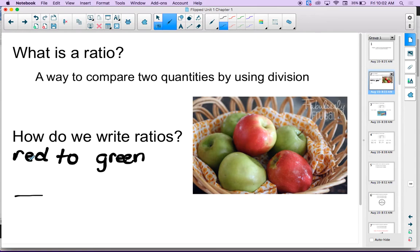So, fraction form means it's going to look like a fraction. We're going to have a fraction bar here. In my numerator of my fraction, I'm going to put the red apples. That's two. In the denominator, I'm going to use the green apples, and from what I can see, there are four green apples. So, my ratio of red apples to green apples is two to four. We read this as the word two.